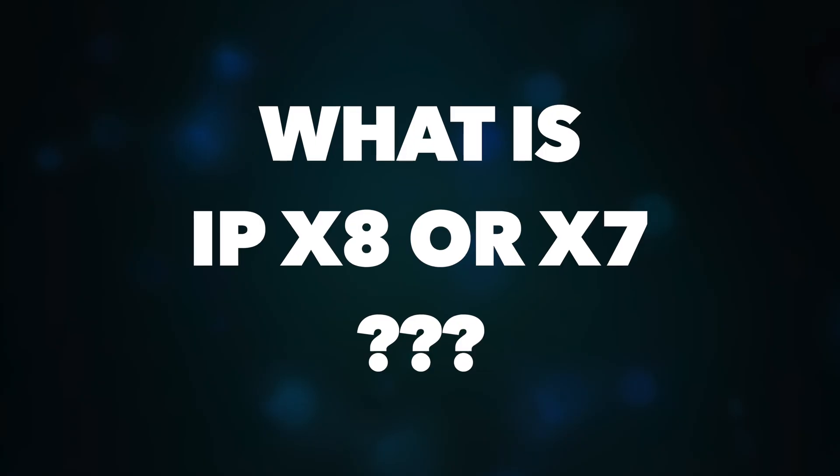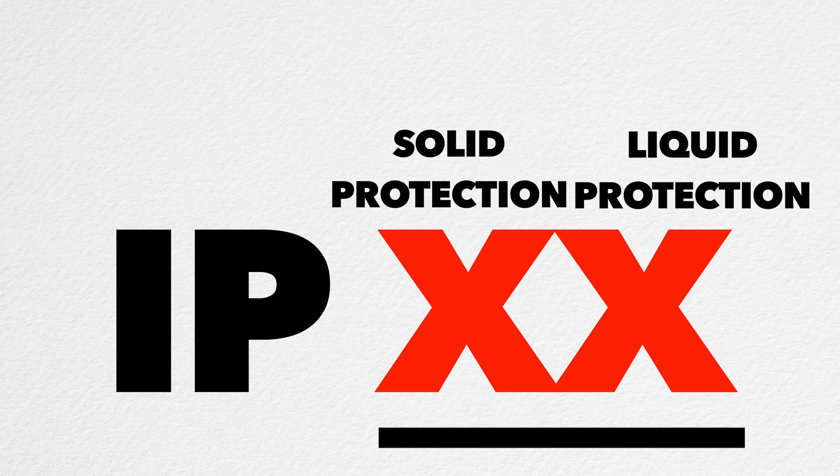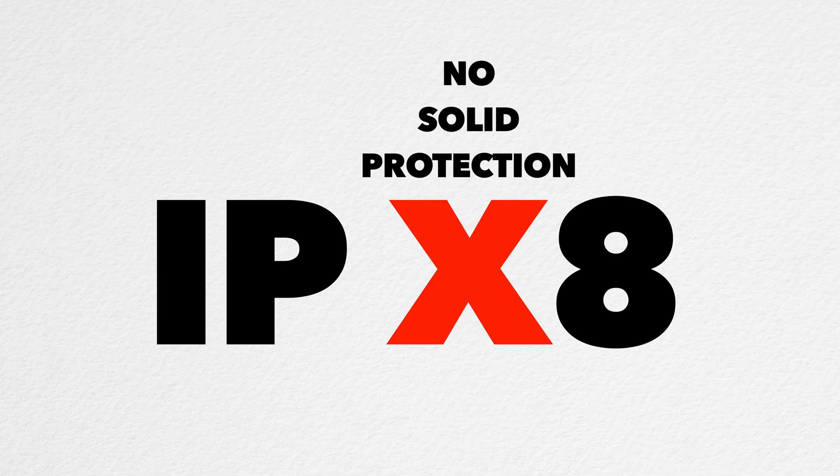Now, what does the 'X' mean in ratings like IPX7 or IPX8? As mentioned, the first digit is for solid protection and the second for liquid protection. When you see an 'X' in place of the first digit, it means there is no solid protection rating — the IP rating applies only to liquid protection. So don't get confused when you see IPX7 or IPX8.